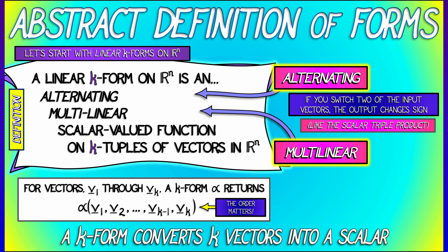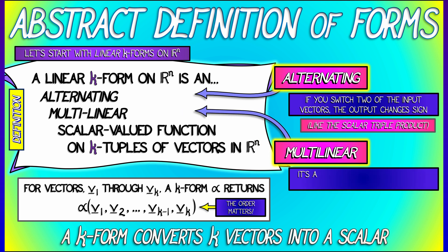Now, multilinear means that it's a linear function in each of the input vectors. So if I hold all the other vectors constant and I double v3, then that means the output doubles. And again, this is just like the way the scalar triple product works.